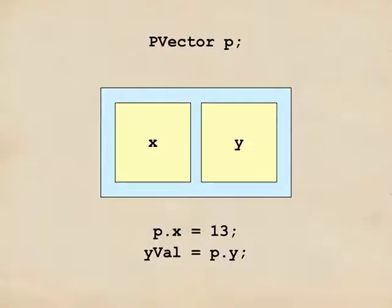To recap, here's the key thing. We have a new data type called a p-vector, capital P and capital V. It has two things inside of it. One is named lowercase x and one is named lowercase y. We get at those things by typing p.x or p.y. I mentioned, of course, that there's also a p.z. But when we're working in 2D, we generally just ignore that.